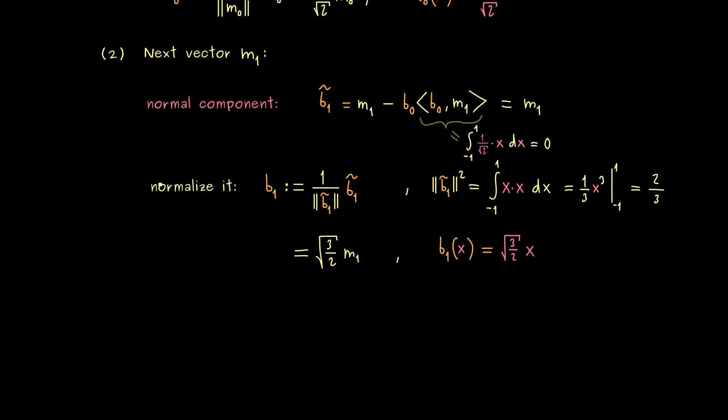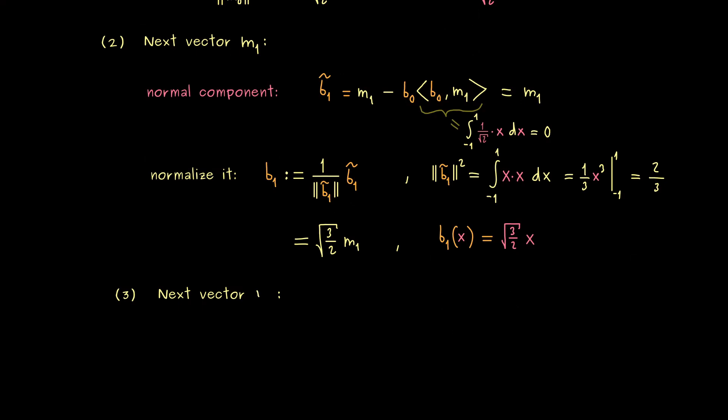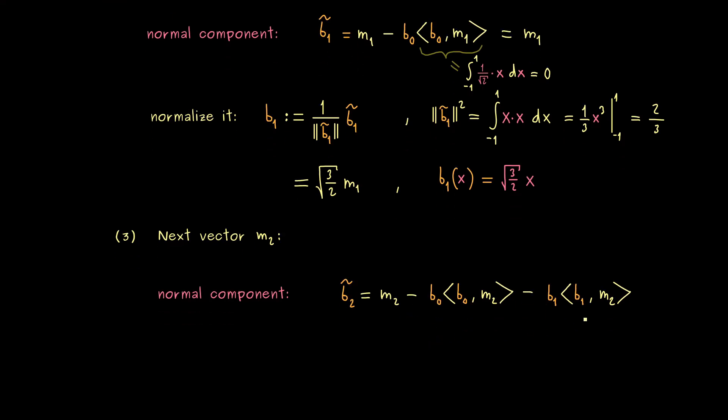With that, we can go to our last step. There we take the third vector, which is m2 in our case. Then as before, we have to calculate an orthogonal projection and then take the normal component of it. So we have m2 minus the projection of m2 onto the subspace spanned by the vectors from before. You see, we just have to calculate two integrals. Let's start with the one with b1 and m2 first. Essentially there we combine x with x squared. Since this is x cubed and we have to integrate from minus 1 to 1, we get out 0 as well. So this is kind of nice, because it means we don't have to subtract this part.